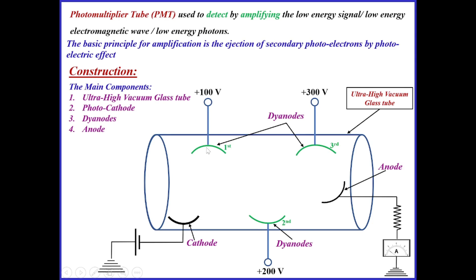So we have the cathode and three dynodes: the first dynode at positive 100 volts, the second at 200 volts, the third at 300 volts. The last electrode is the anode, which collects the high-speed, high-flux electrons and the signal is detected by the ammeter.